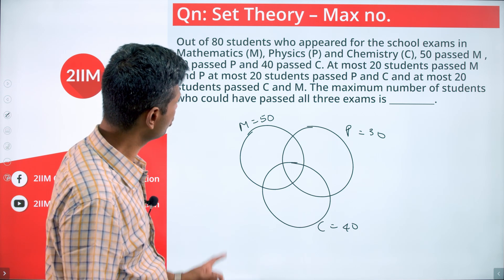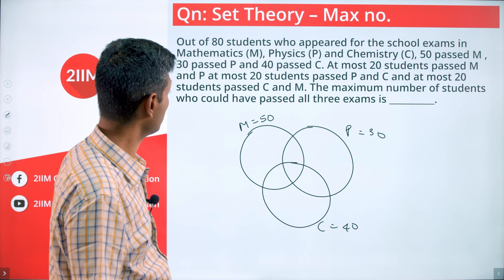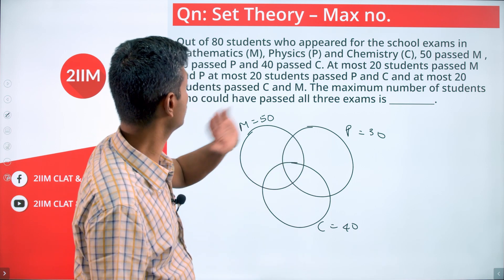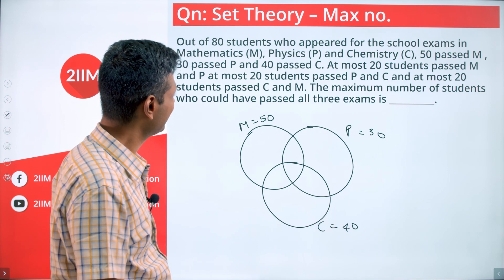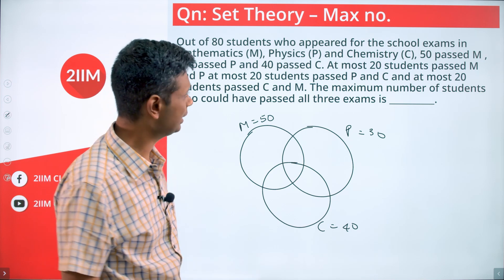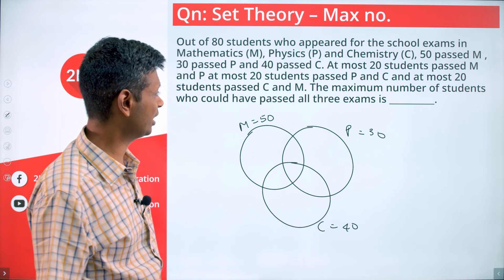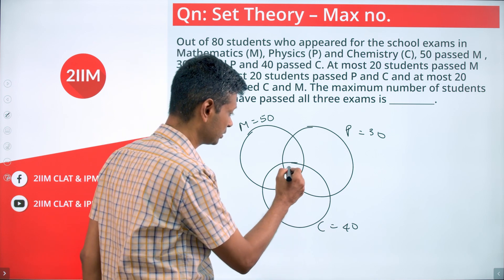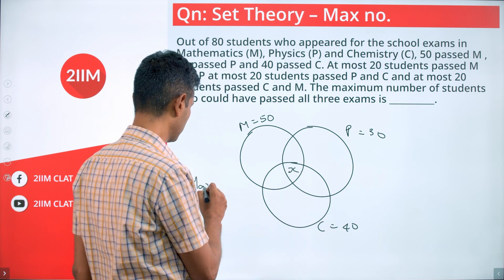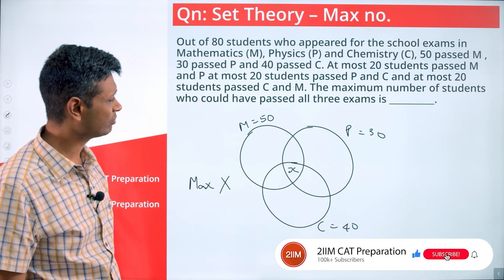At most 20 students passed Physics and Chemistry, at most 20 students passed Chemistry and Math, and at most 20 students passed Math and Physics. The intersection has a maximum of 20. The maximum number of students who could have passed all three exams is, let's say, x. We want to find the maximum value of x.